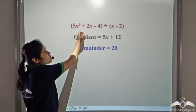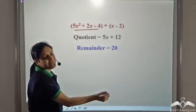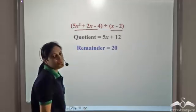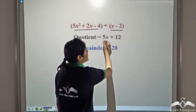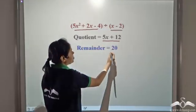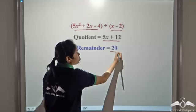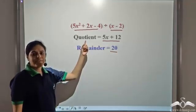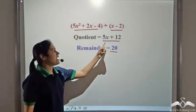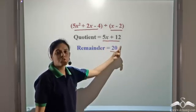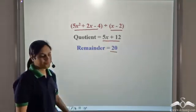5x squared plus 2x minus 4 divided by x minus 2 gives the quotient as 5x plus 12 and leaves a remainder of 20. You can divide it and verify that we will get the quotient as 5x plus 12 and remainder as 20.